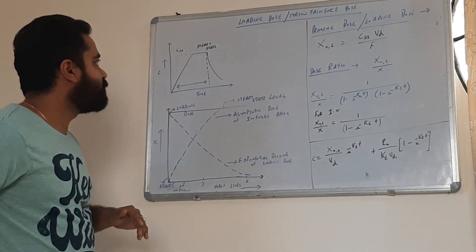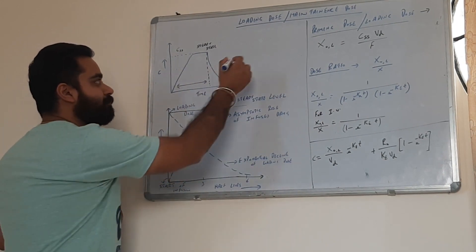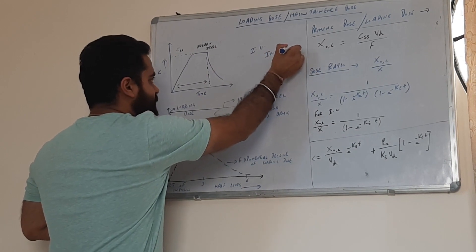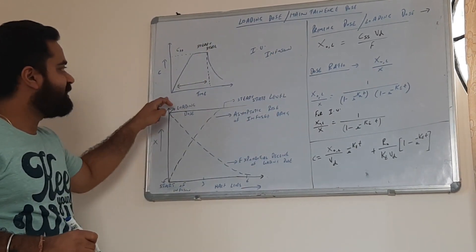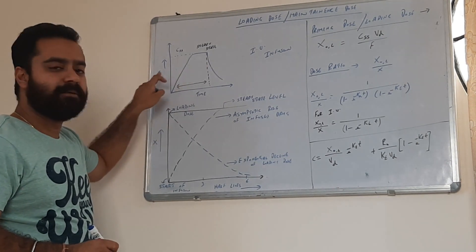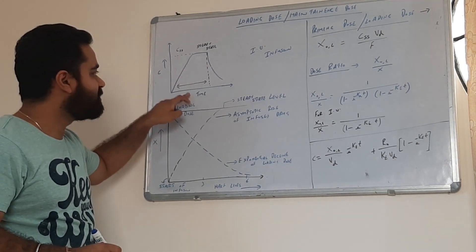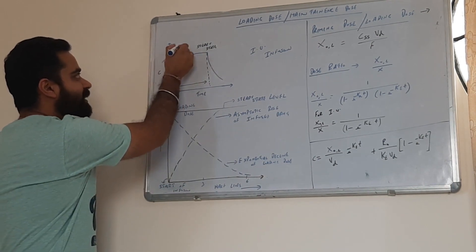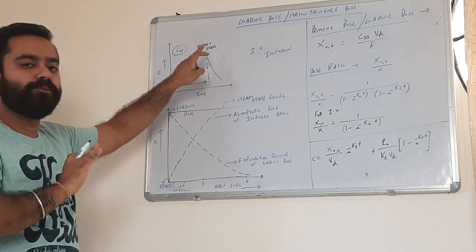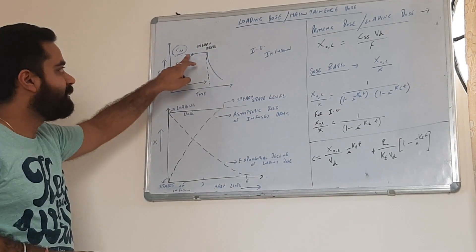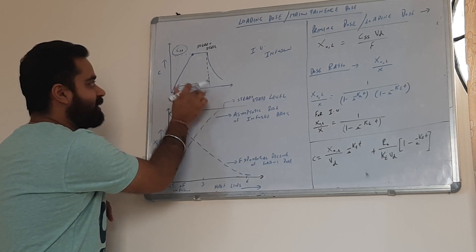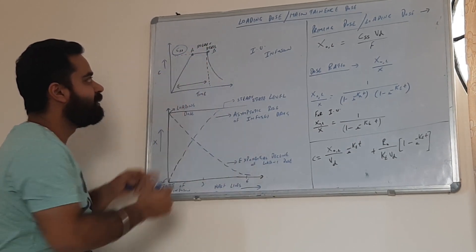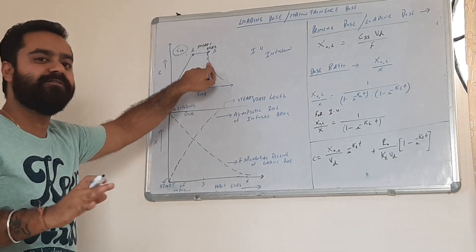Now, let us understand this by the help of this graph. This graph was done previously in the case of IV infusion. The concentration steadily rises in the blood — the blood plasma concentration slowly increases with time and reaches a point which is the steady state. Unless this CSS or steady state is achieved, there is going to be no therapeutic activity.